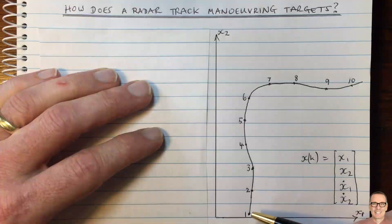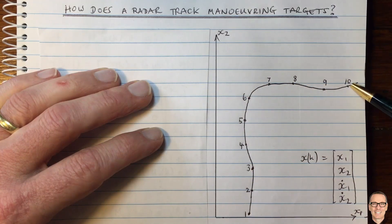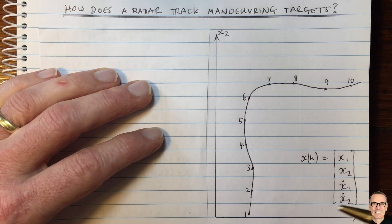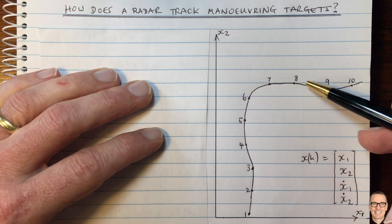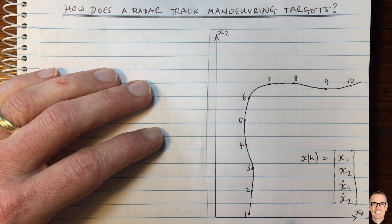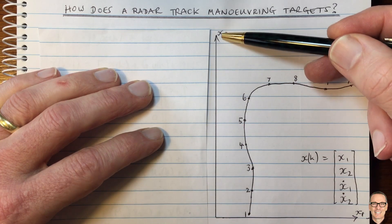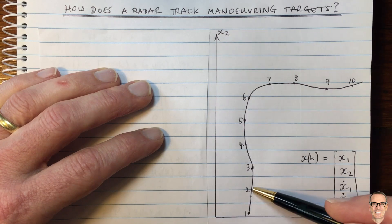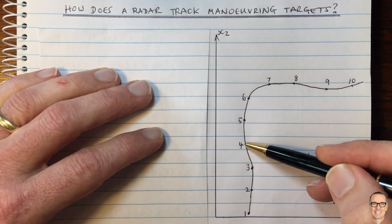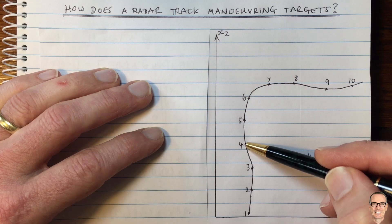So let's start with an example of a maneuvering target, perhaps an aeroplane or a ship, and it's following this path that I've drawn here. I'm showing here an x1 direction and an x2 direction. And what I'm showing with the dots is the location of the target when the radar pulse hits it.